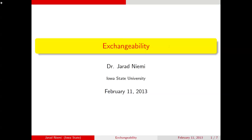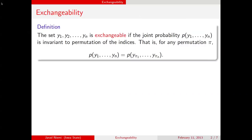Hello, this is Jared Nimi here with a mini-lecture on the concept of exchangeability and its applications to hierarchical models. First off, the definition of exchangeability: if you have a set of random variables y1 up to yn, then it's said to be exchangeable if the joint probability of that set is invariant to permutation of the indices. That is, for any permutation pi, the probability is equal to the probability of the permutation.